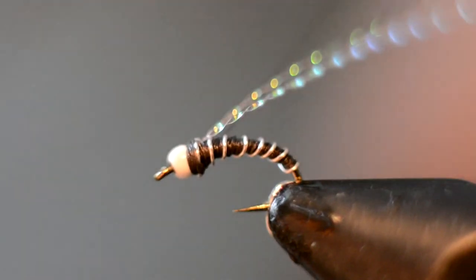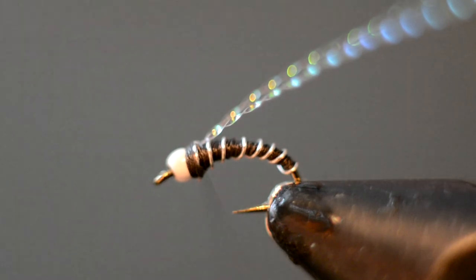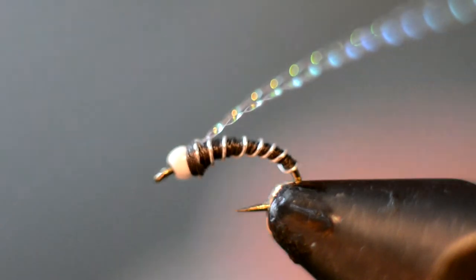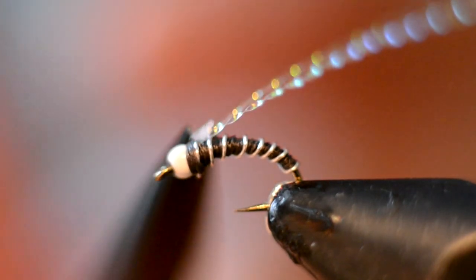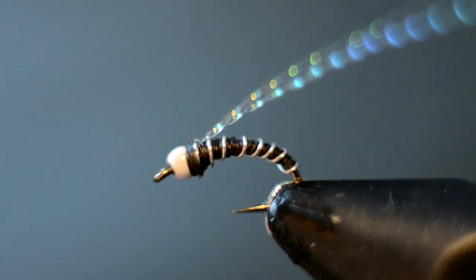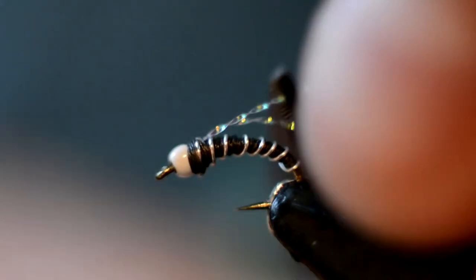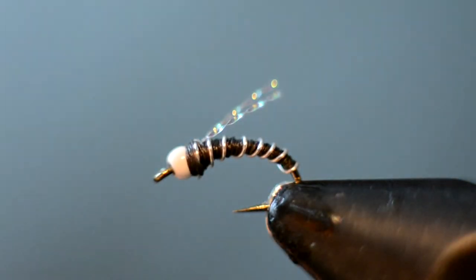That pretty much does it for the zebra midge. You can, if you want, put some UV resin or something on it to coat the body. Some people do that. It's fine. It'll help it sink a little faster and make it more durable. I like them just as is. I also trim this wing up about three-quarters of the body just like that.